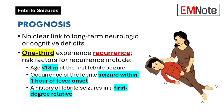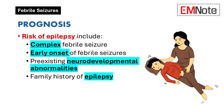The younger the child at the time of the first seizure, the higher the risk. So a one-year-old is more likely to have another one than, say, a four-year-old having their first seizure. Another big worry for parents is the risk of epilepsy. The risk of epilepsy is slightly increased after a febrile seizure — about 1-2%, compared to about 0.5% in the general population. It's a small increase, but we need to be upfront with parents about it.